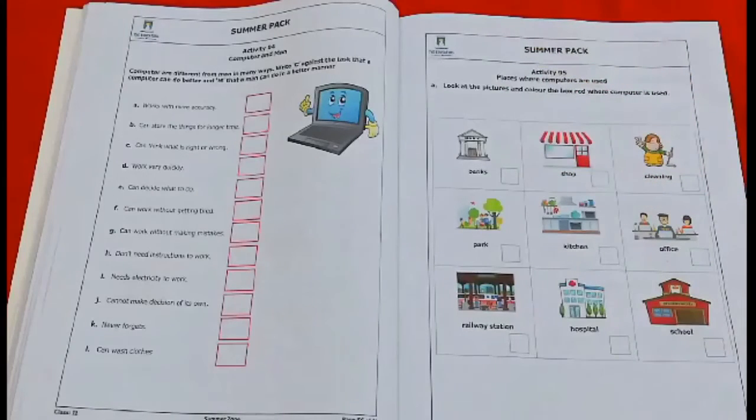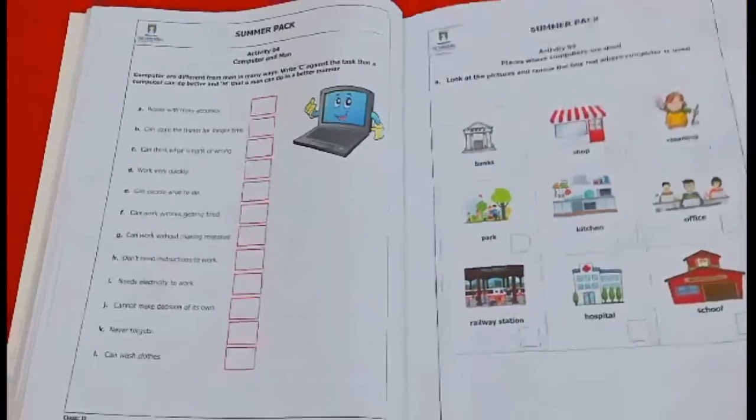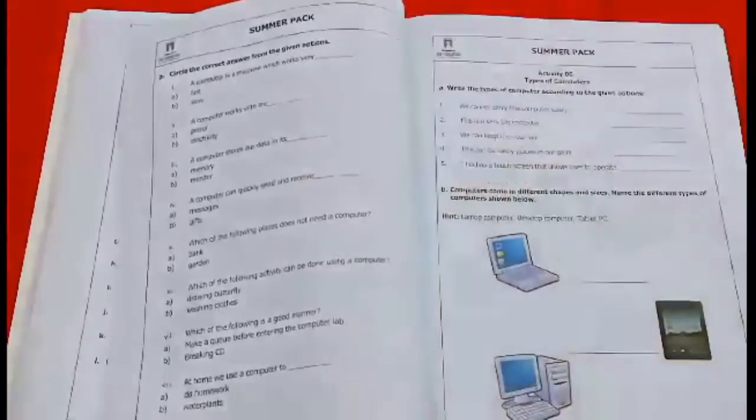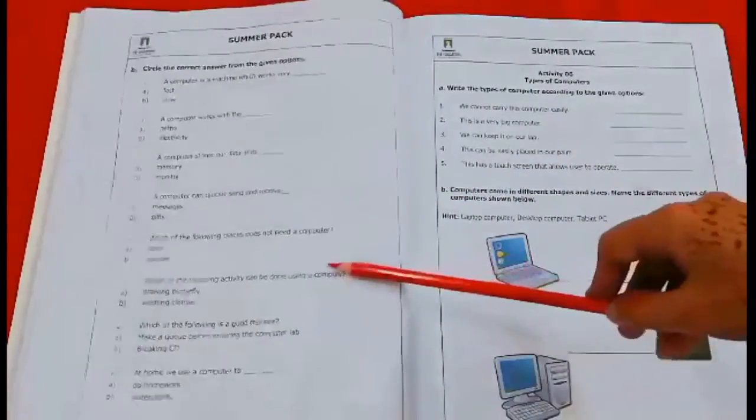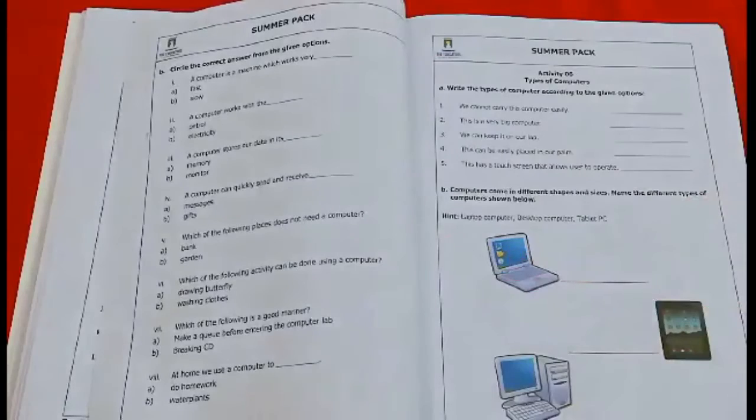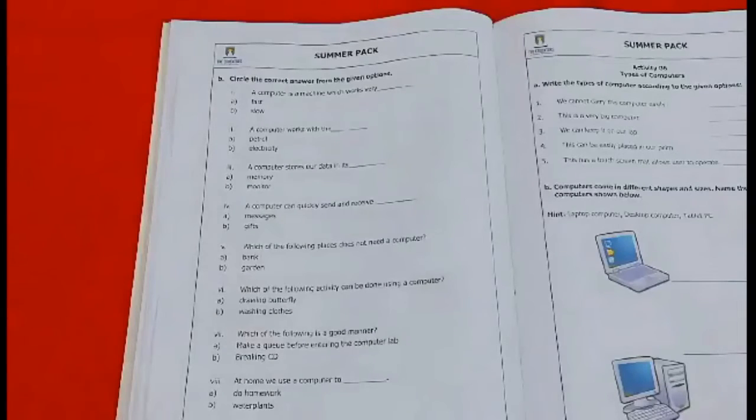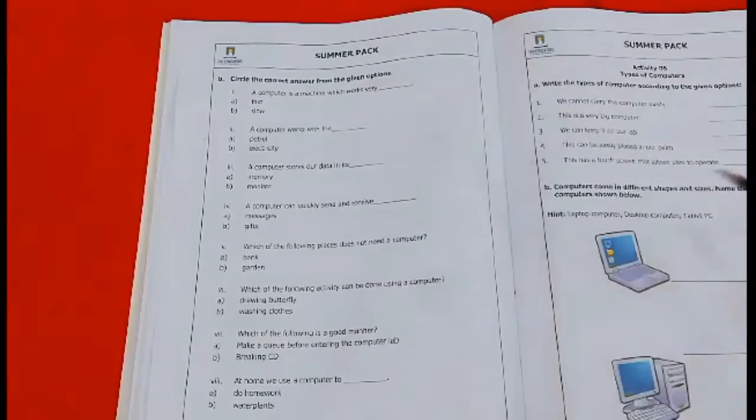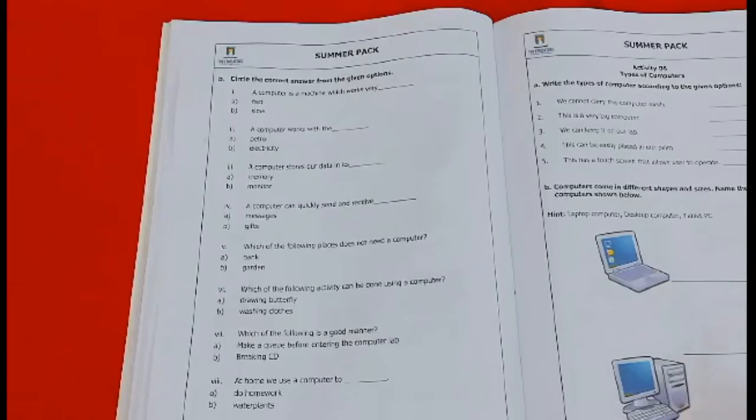Now we will go on page number 58. So class, on page 58, we have two parts shown. Circle the correct answer for the given options. We have a statement given, and with the statement, we have two options given.